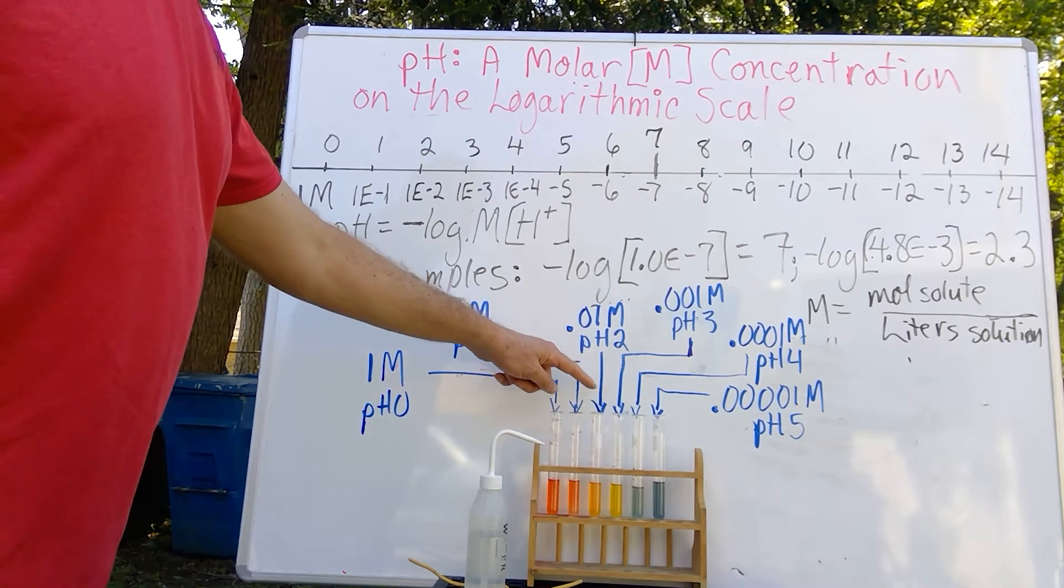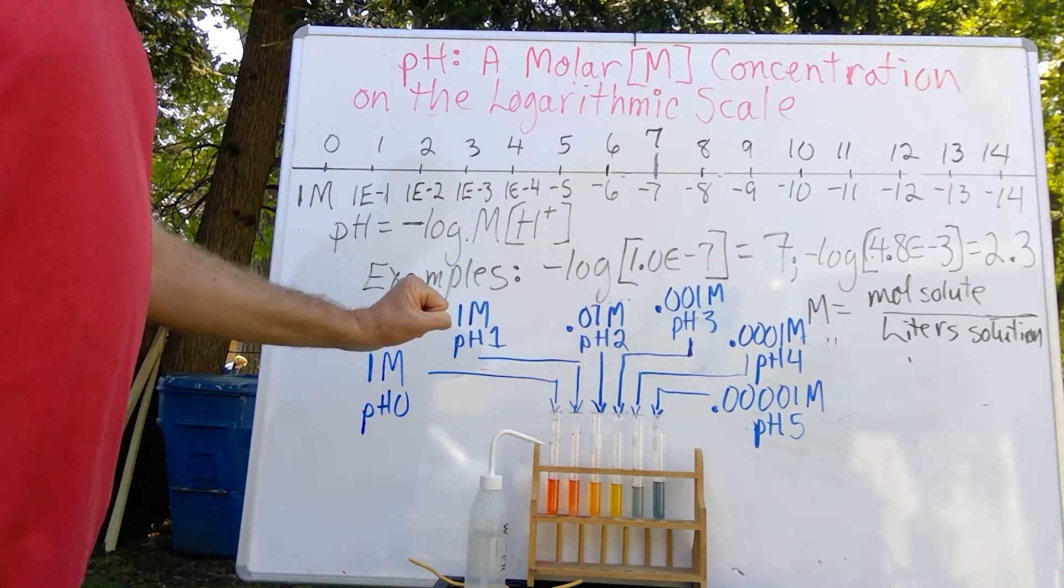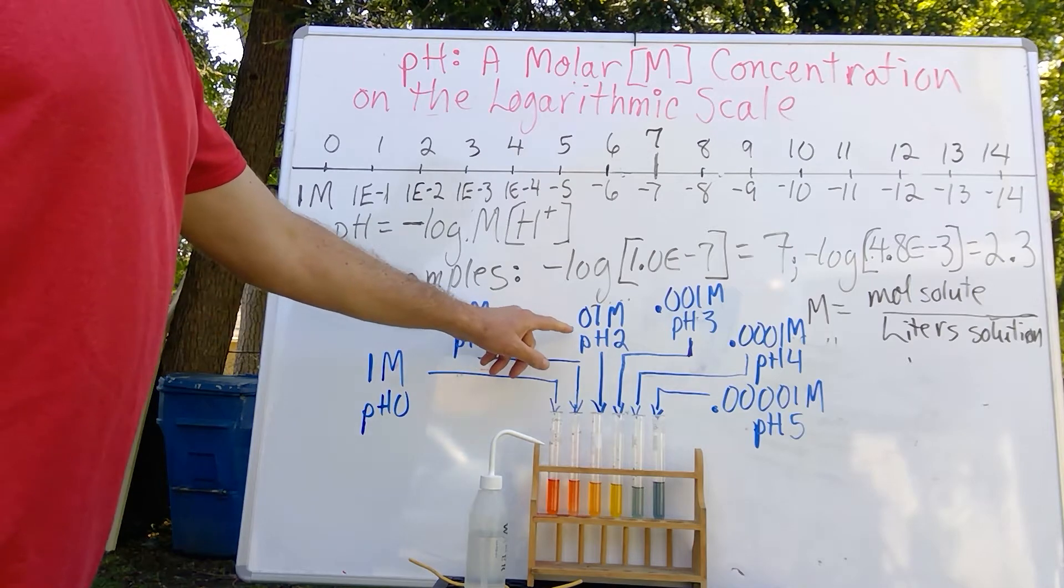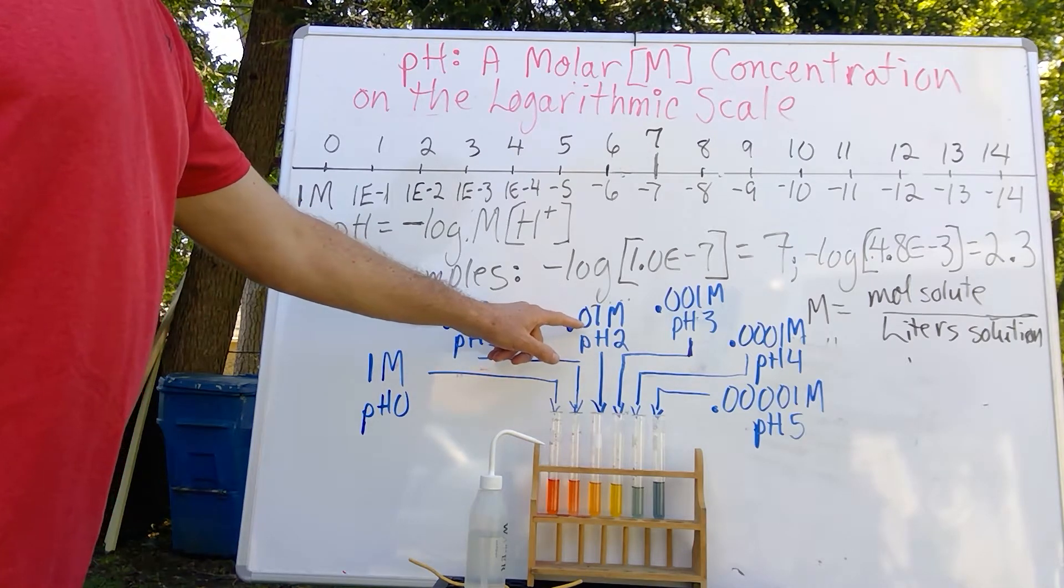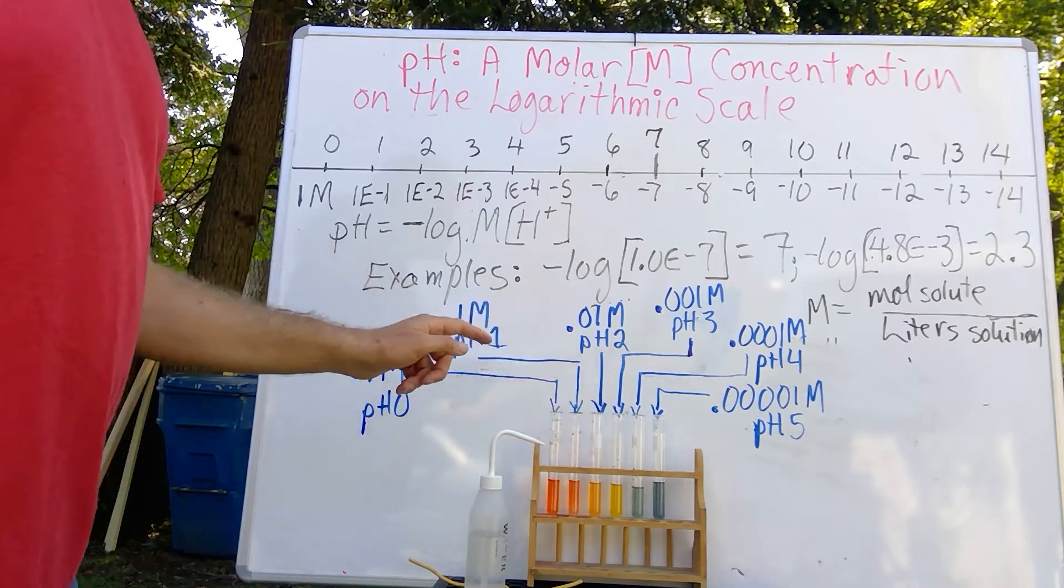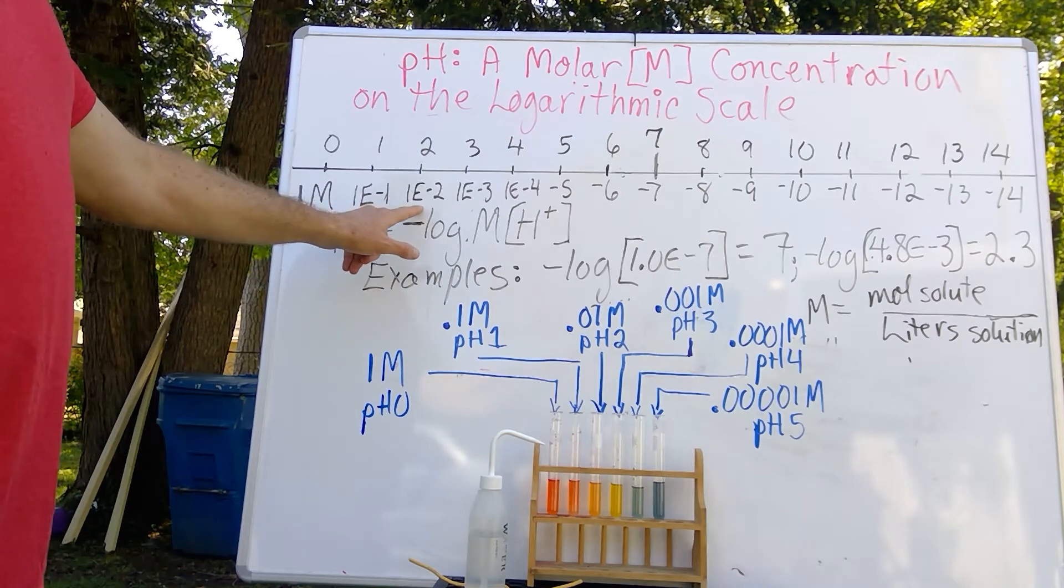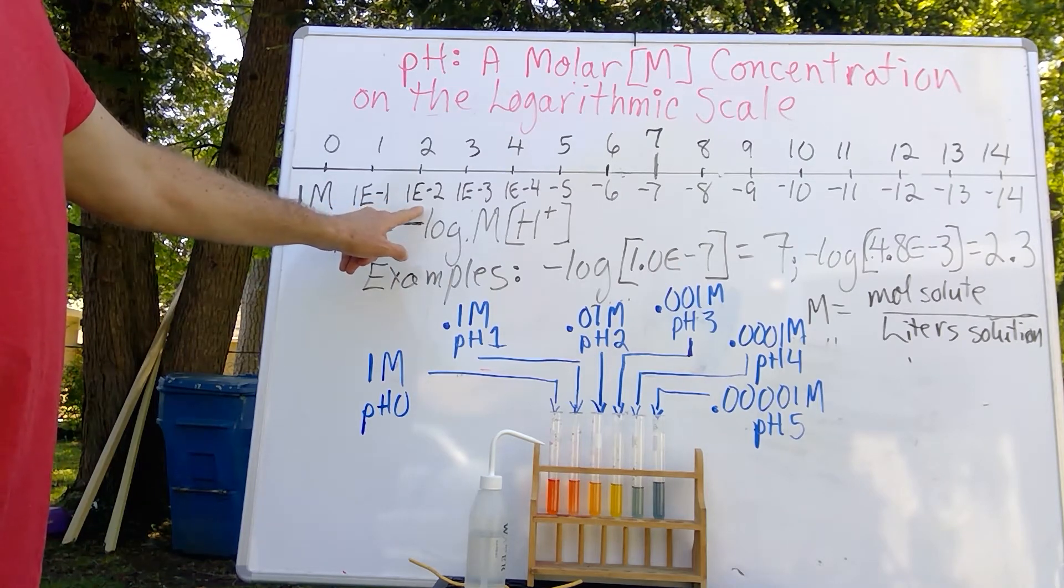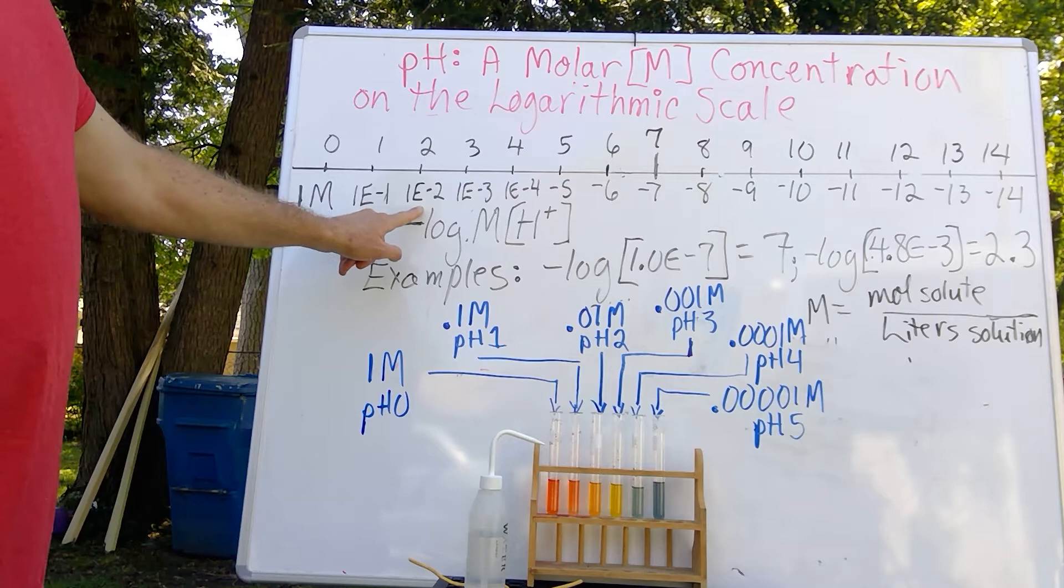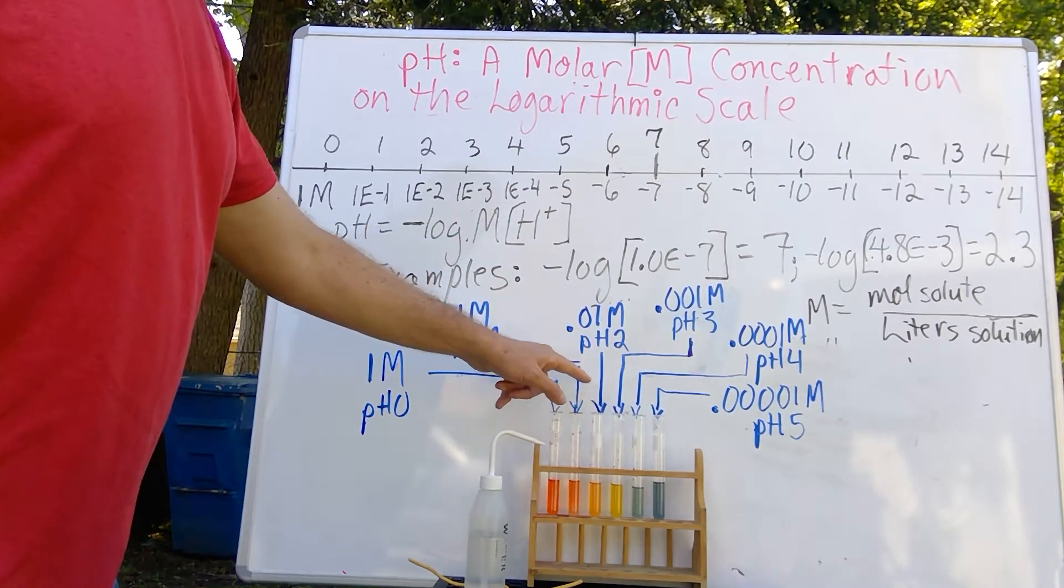Then, as we go to another factor of 10 by diluting, we have 0.01 molar concentration. Notice that we've essentially moved the decimal place one place to the left, and now two places to the left. Remember how zeros act as placeholders. So, we're now at 1 times 10 to the negative 2 power of acid. And that negative log turns it into pH 2.